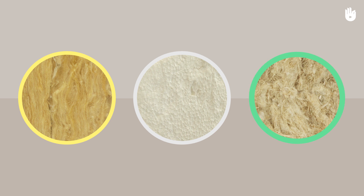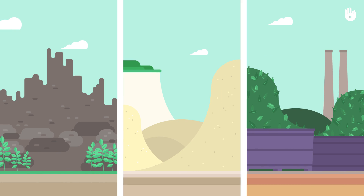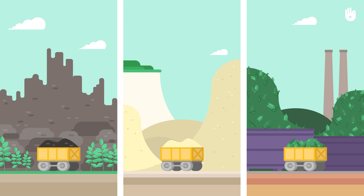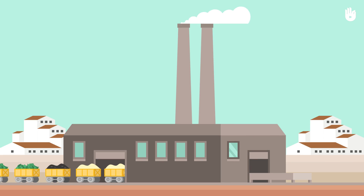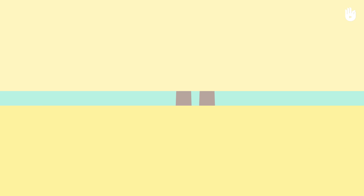Insulation materials can be divided into three groups. Firstly, mineral insulation. These are made from natural materials such as volcanic rock, sand or even recycled glass. These materials are industrially transformed to produce wool. The mineral wools used for most insulation are glass wool and rock wool.